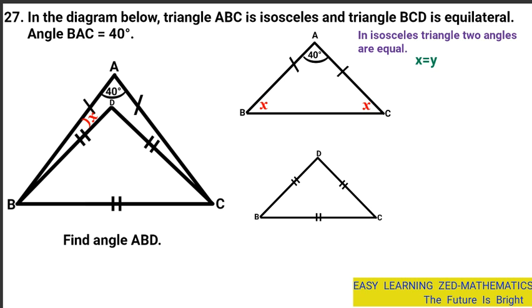We can say: 2X plus 40 degrees is equal to 180 degrees. We want to find the value of X, so we put like terms together: 2X is equal to 180 degrees minus 40 degrees.